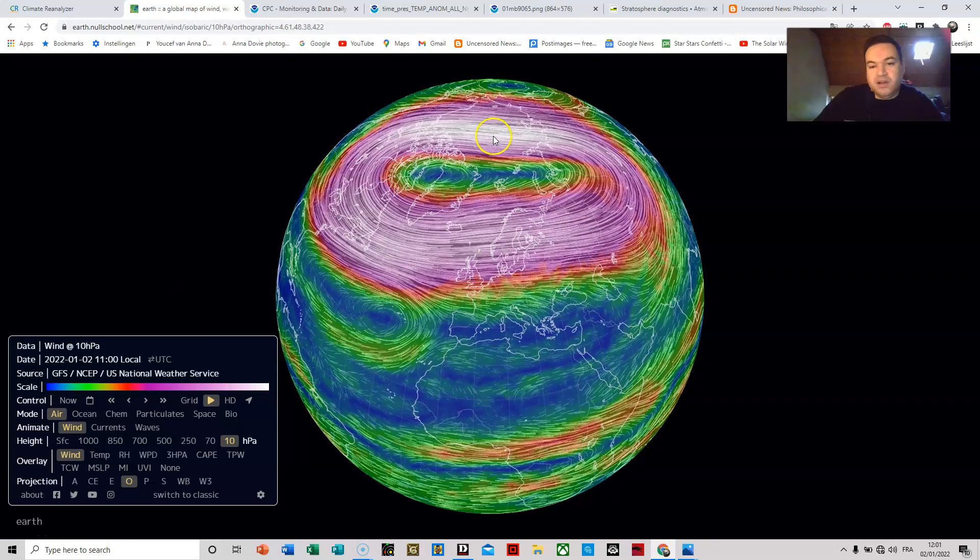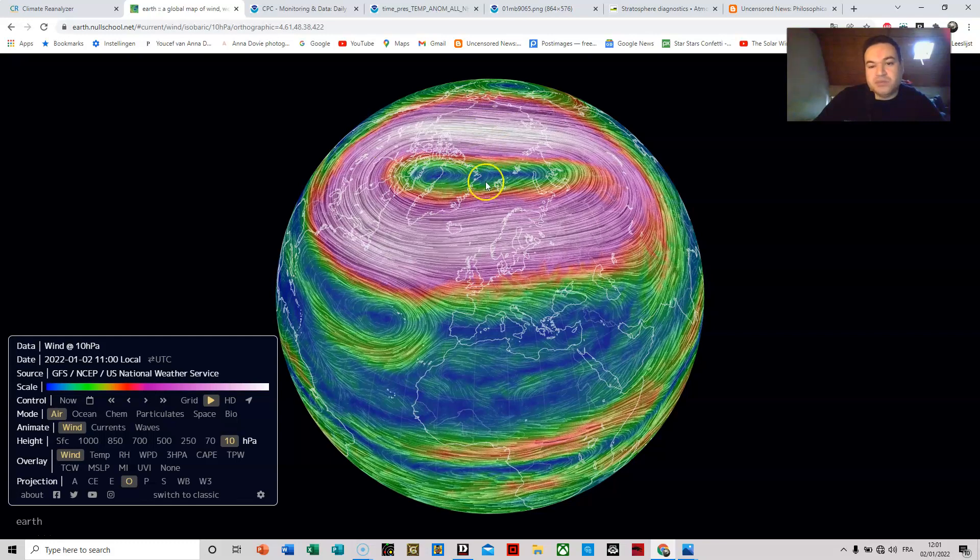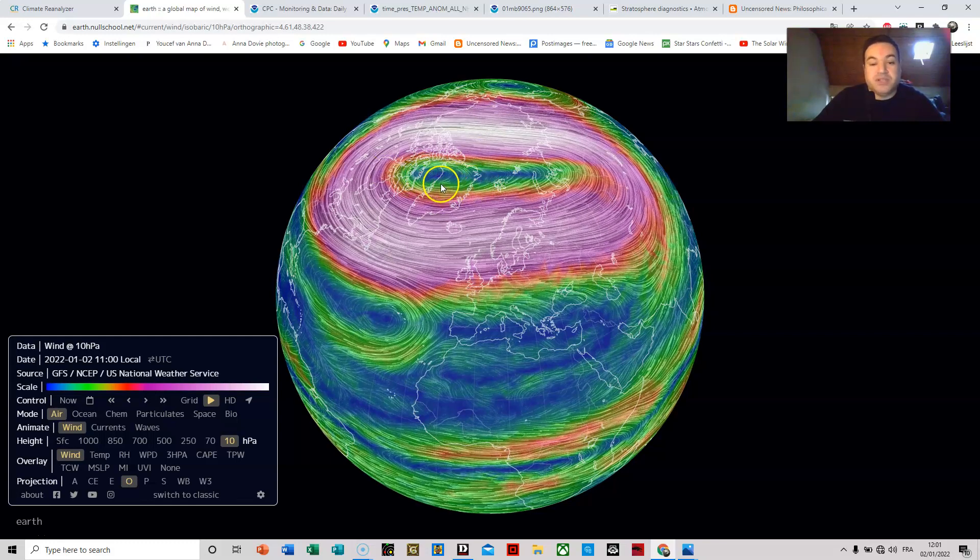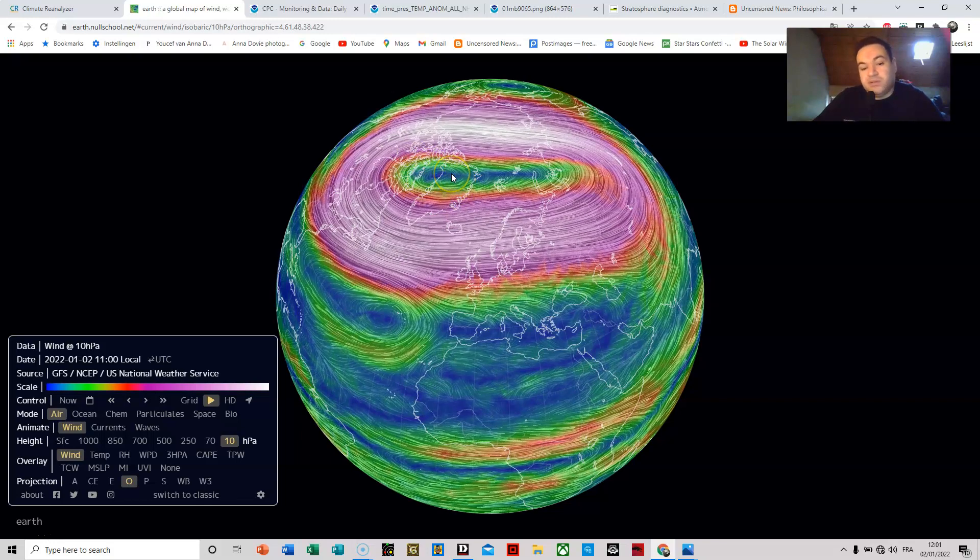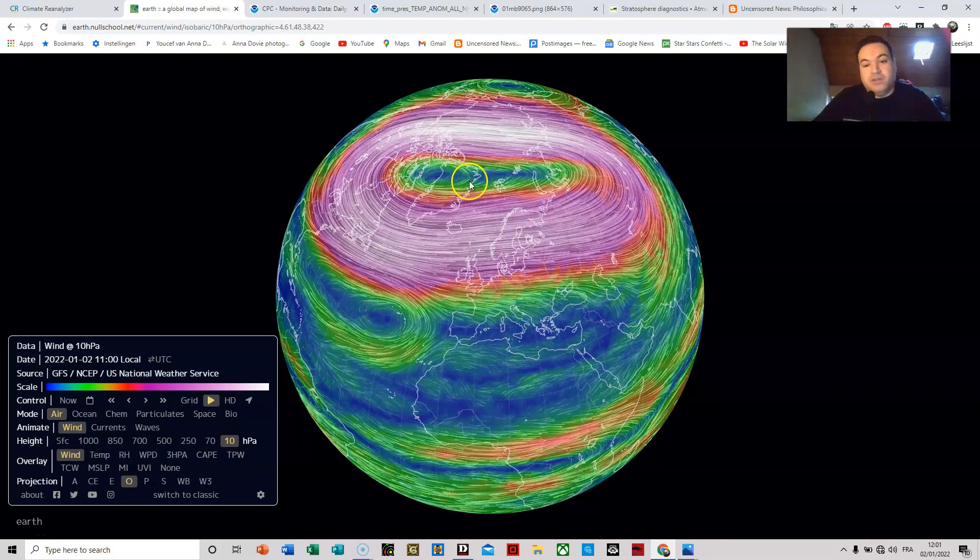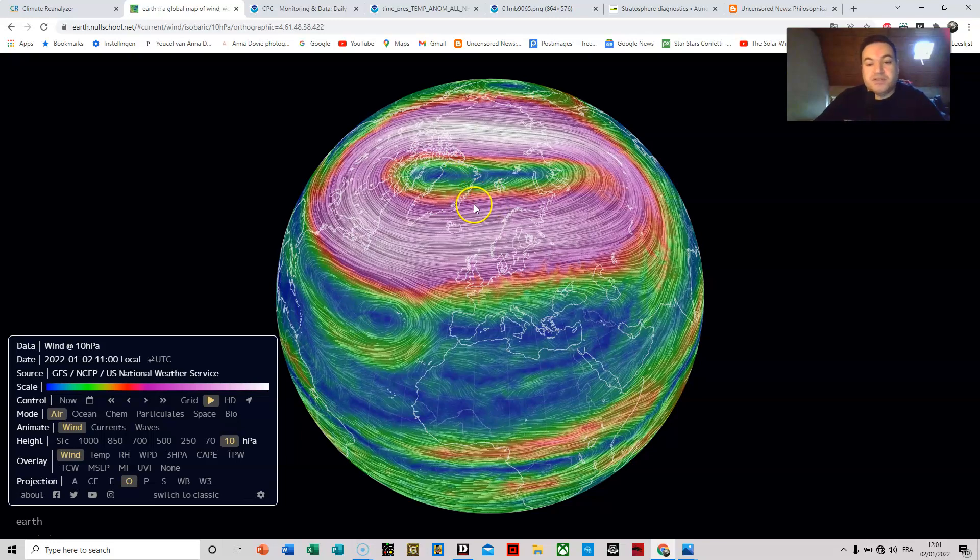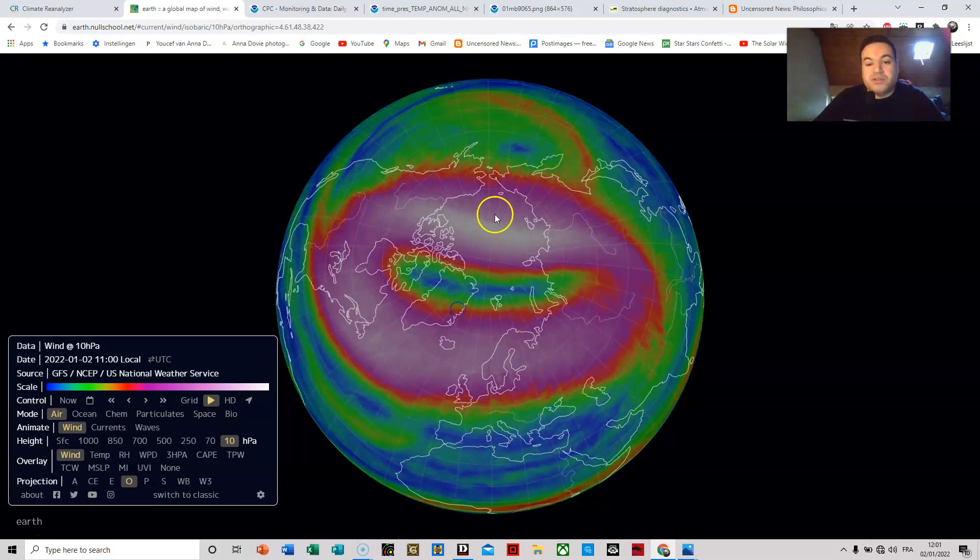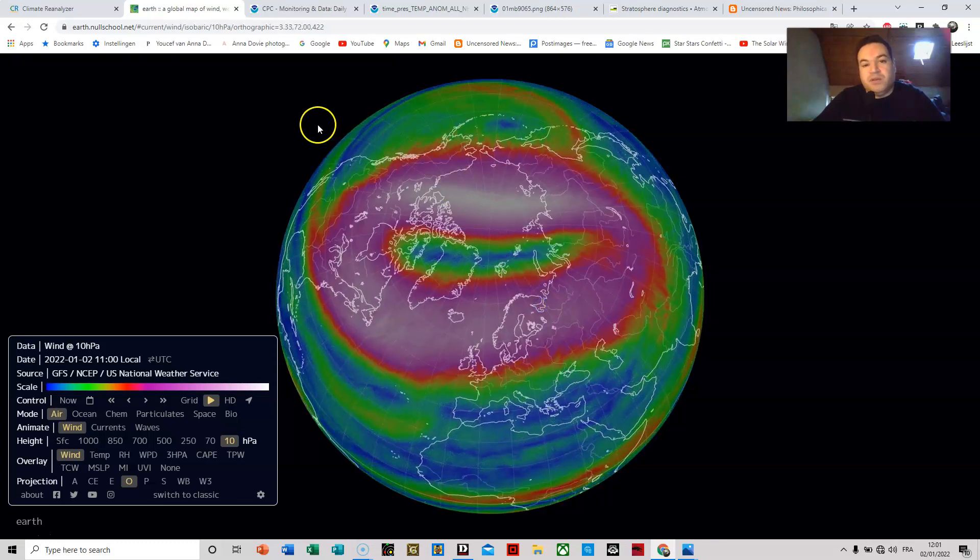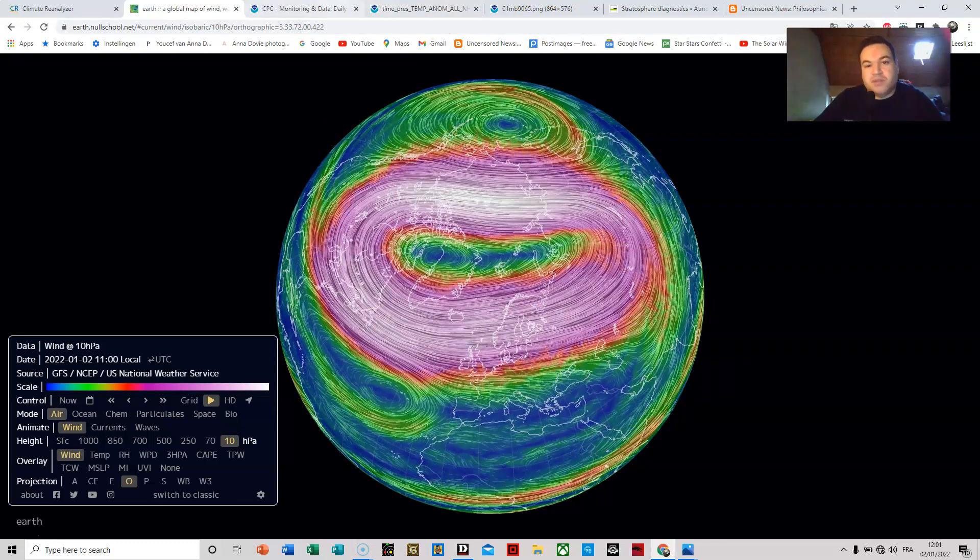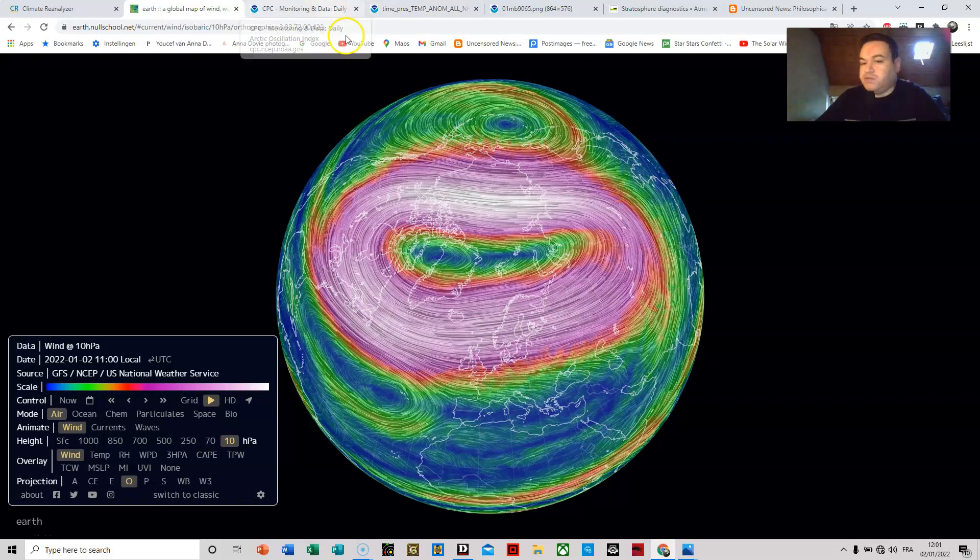It is located way southwards of where it should be. Actually, the core of the polar vortex seems to be a little bit above Greenland. This in itself is not normal because it's supposed to be right on top of the Arctic.